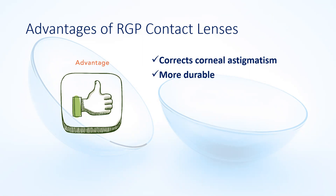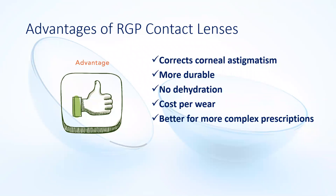There are quite a few advantages to gas permeable lenses. First, they can be used to correct astigmatism — because of how they fit against the eye, they can correct small and larger amounts of astigmatism without needing a specialist lens. They're also much more durable than soft contact lenses; typically people replace them around every six months to a year, and occasionally a very careful patient might get two years out of one lens. Because a rigid gas permeable lens is rigid, it doesn't dehydrate and doesn't contain lots of water. There are also more specialist designs for more complex prescriptions, and they can give excellent vision, comparable to or even slightly better than spectacles.